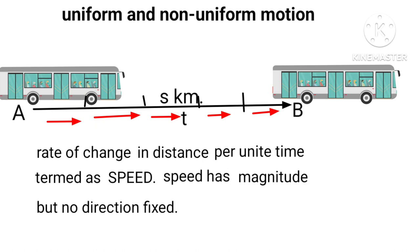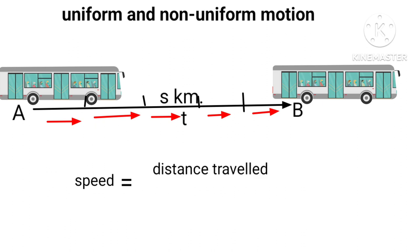Speed has magnitude but no direction. Mathematically written as speed equals distance traveled divided by time taken. SI unit of speed is meter per second and is a scalar quantity.